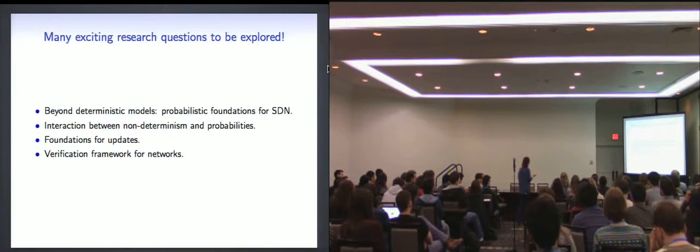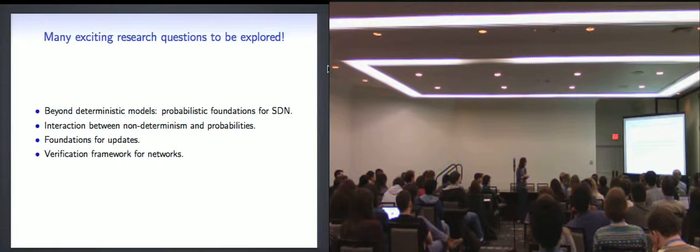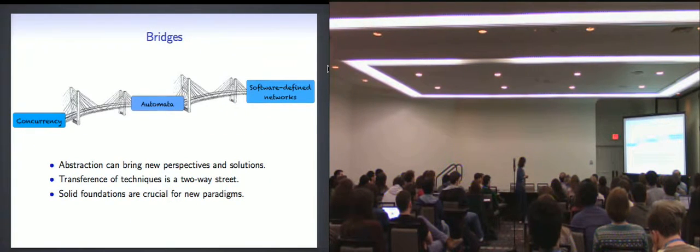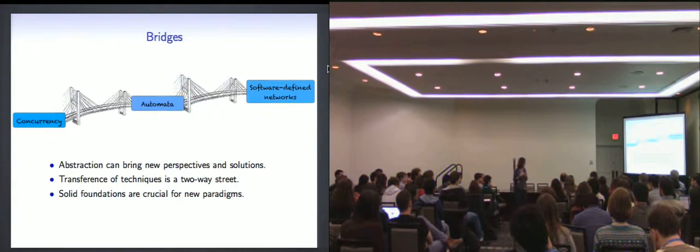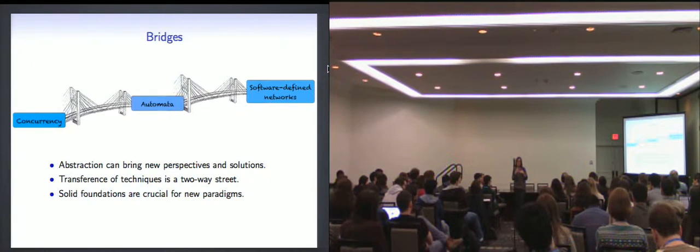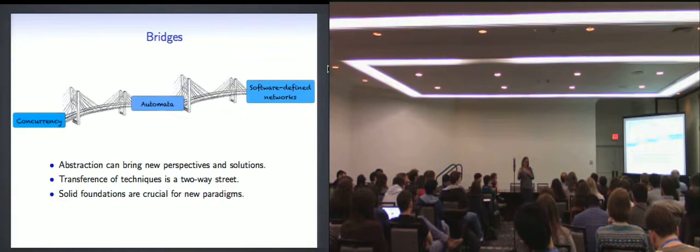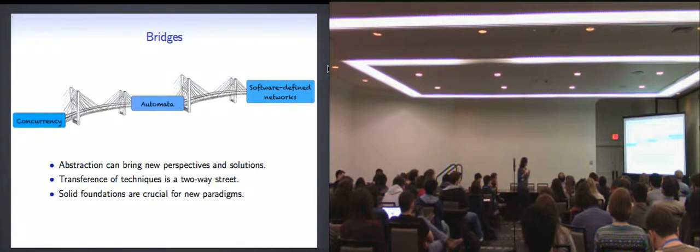There's a lot of exciting research questions to be explored in NetKAT and in programming language for software defined networks. I list a few here in case someone is still looking for a PhD and wants to join us. I have some shameless advertising in a little bit. So there's a lot of open questions that we believe can be answered by continuing this exploration of connections between automata theory, programming language semantics and networks. One of the things we've been looking at recently is probabilistic foundations for software defined networking. I find this a very exciting area.